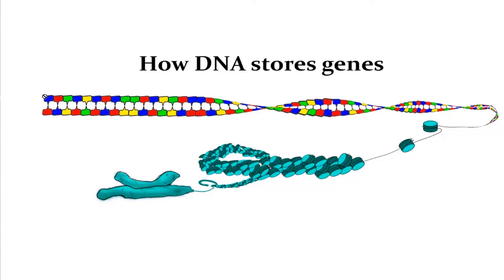DNA always comes in two strands — a leading strand and a complementary strand — so we say DNA is double-stranded. It's not in a straight line; they fold in a helix formation. That's where the term double helix comes from, because we have two strands forming in a spiraling pattern.